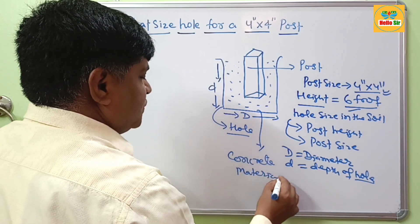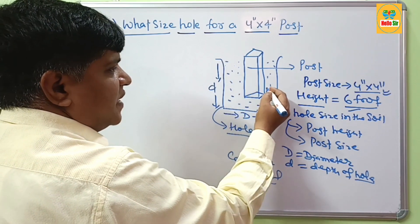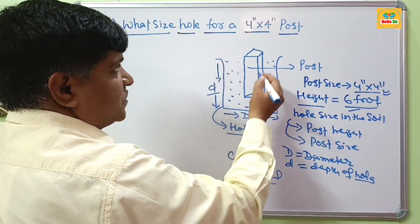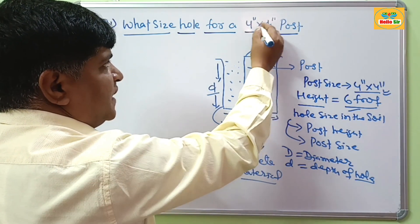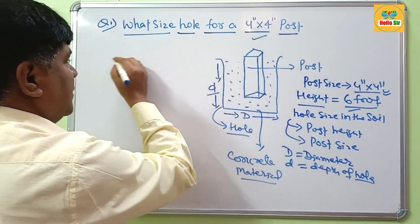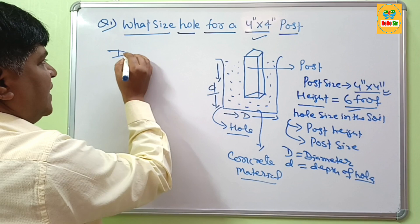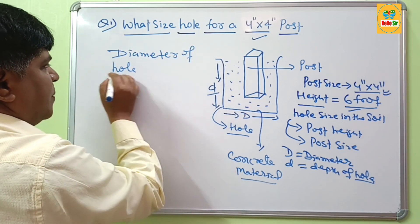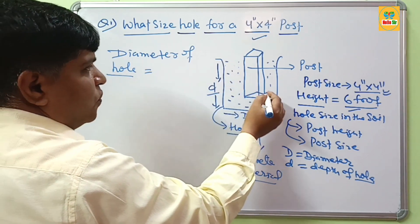And your question is what is the diameter of this hole and how it should be deep to set the post for 4 inch by 4 inch post. For calculation, to calculate the diameter of your hole. What should be the diameter of your hole?